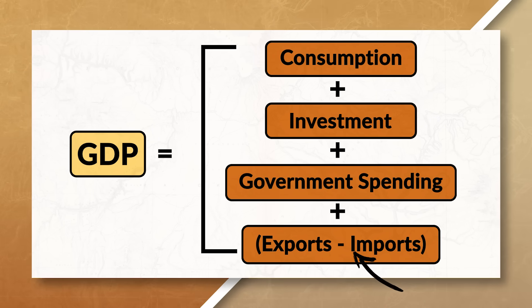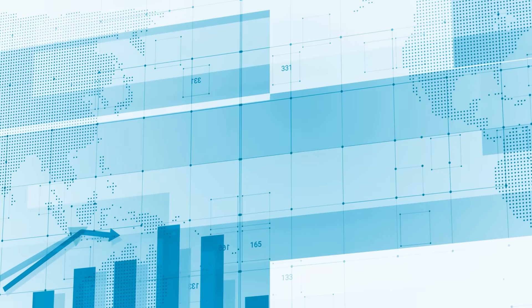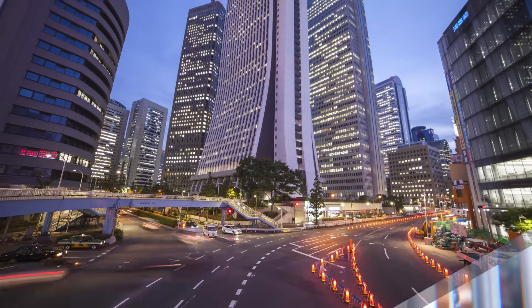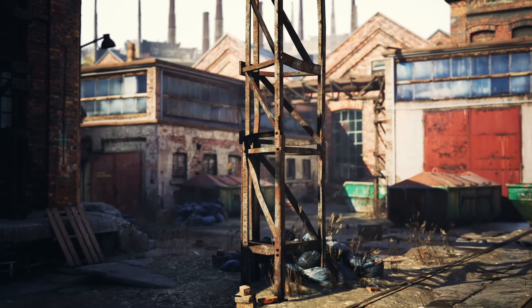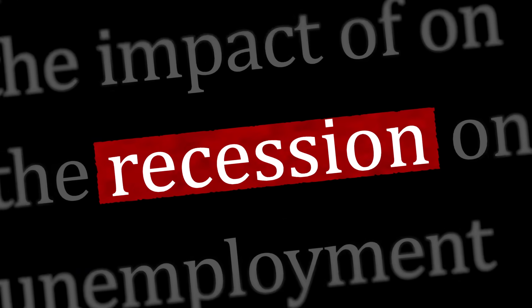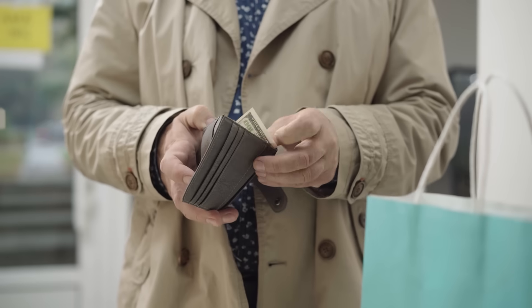Notice that we are subtracting imports from our calculation because the GDP is only factoring in production that occurs inside the country's boundaries. When GDP is increasing, it shows that businesses are expanding, jobs are being created, and the economy is growing. It also indicates more consumer and government spending, due to the government receiving more tax revenue and consumers having more disposable income. But when GDP is declining, it shows that the total value of goods and services inside the country's boundaries is shrinking, which can be due to an economic contraction or possibly a recession. A decrease in GDP also often indicates that businesses may be struggling, jobs are being lost, and consumers are spending less money.